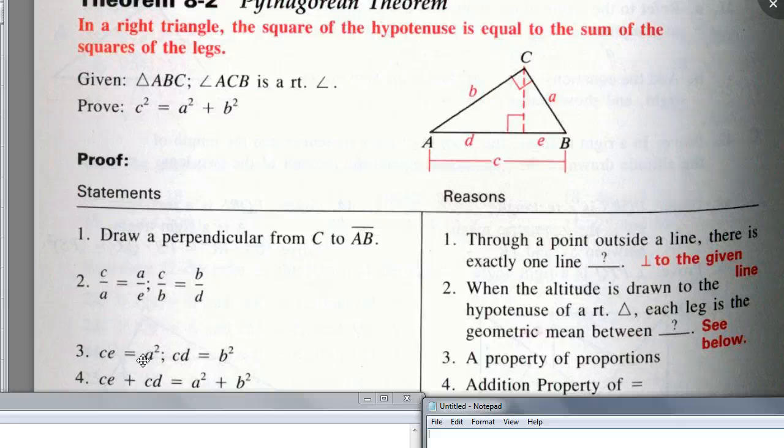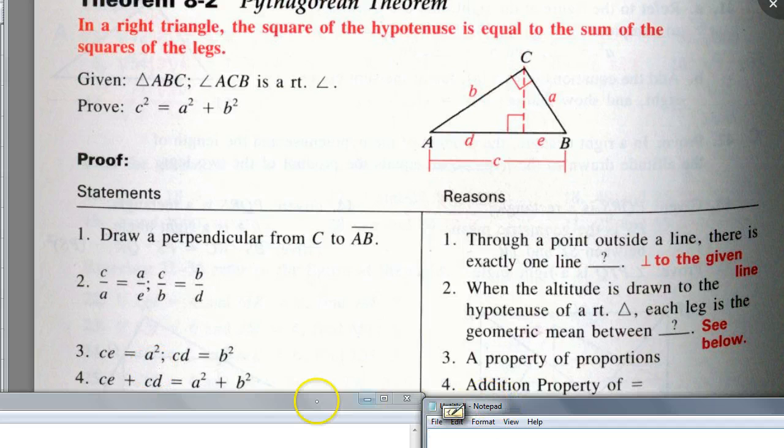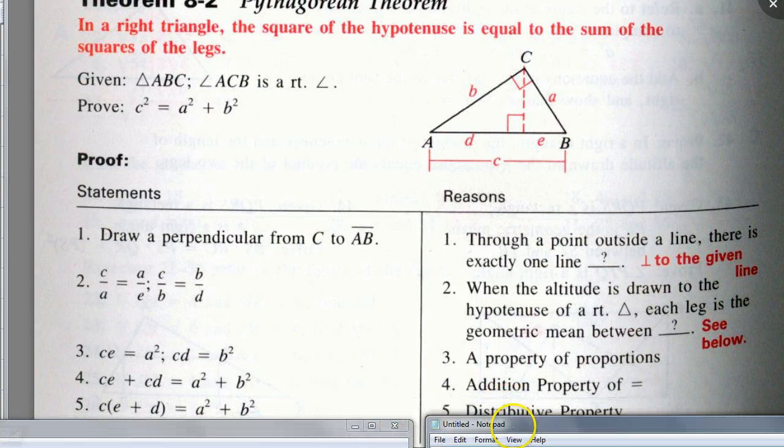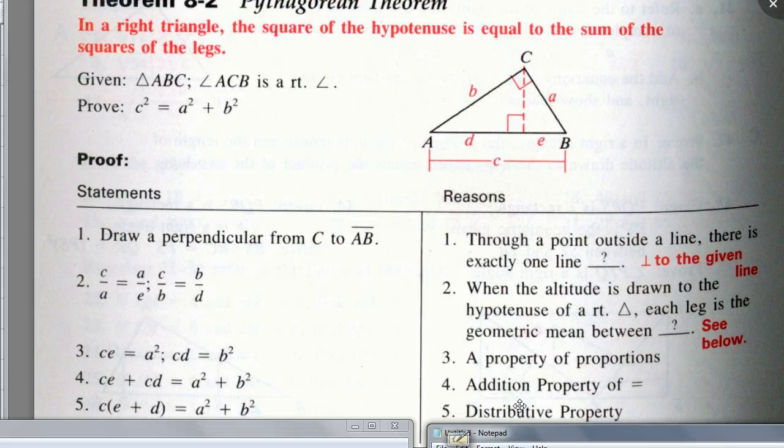Okay, we got C E plus C D, right? Is there a way to rewrite this with C times something? Yeah, exactly. And what would the reason be? It's just simply? Distributed property. Distributed property.